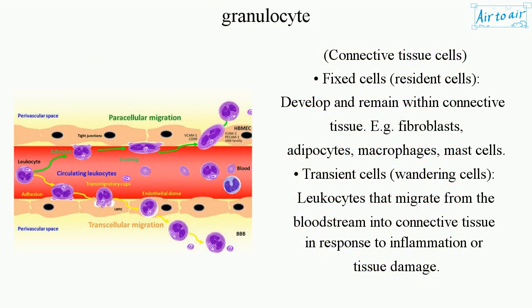Connective tissue cells — Fixed cells (resident cells): develop and remain within connective tissue. Examples include fibroblasts, adipocytes, macrophages, and mast cells. Transient cells (wandering cells): leukocytes that migrate from the bloodstream into connective tissue in response to inflammation or tissue damage.